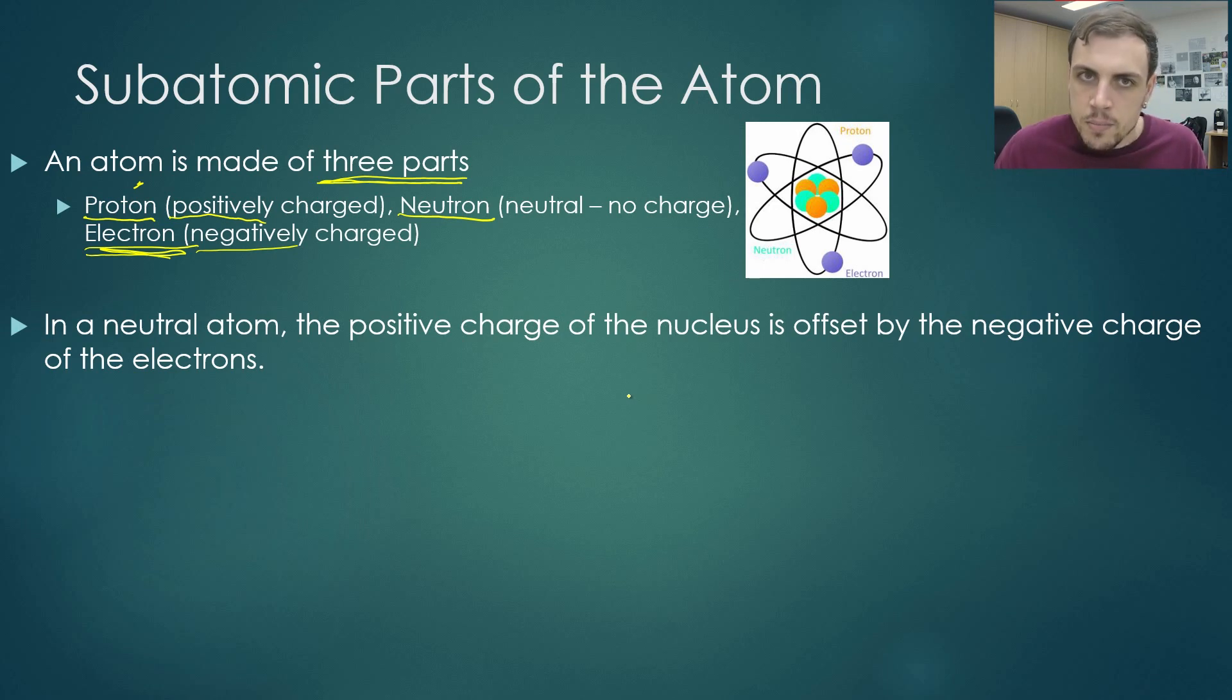Now in a neutral atom, in a typical atom, normally the number of protons and the number of electrons will cancel each other out. So typically you'll have the same number of protons as you will electrons. So that means the number of positive charges and the number of negative charges will equal. So the overall charge of the atom will be zero.